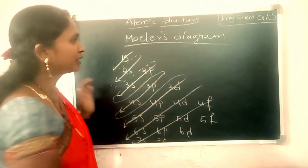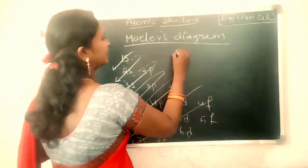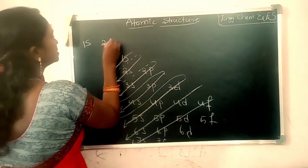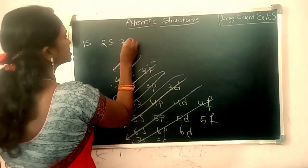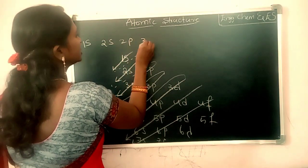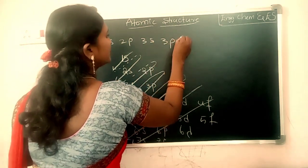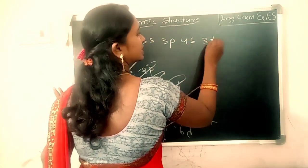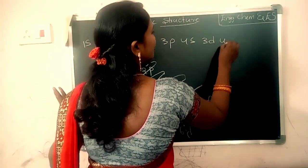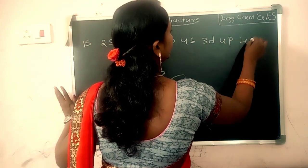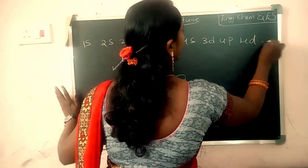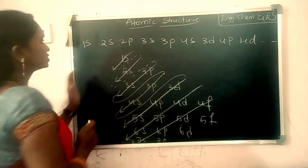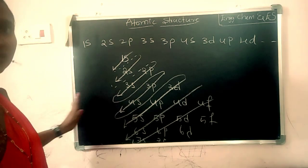So we can write the order of energies as: 1s, 2s, 2p, 3s, 3p, 4s, 3d, 4p, 4d, and so on. This order starts from the lowest energy orbital, 1s, and increases from there.